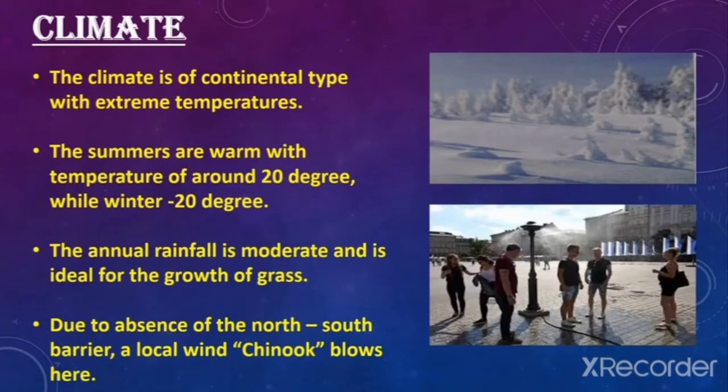Climate of prairies: the climate is of continental type with extreme temperatures. The summers are warm with temperatures of around 20 degrees, while in winter it is minus 20 degrees. The annual rainfall is moderate and is ideal for the growth of grass. Due to the absence of a north-south barrier, a local wind called Chinook blows here.